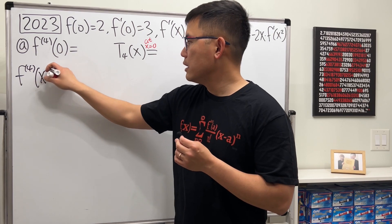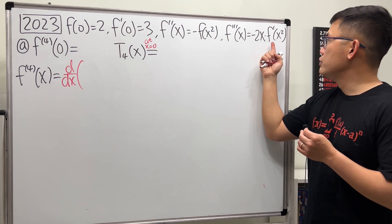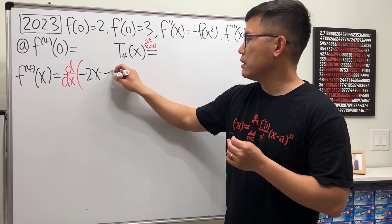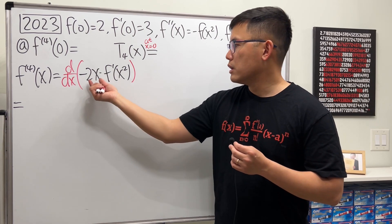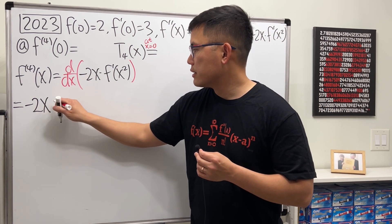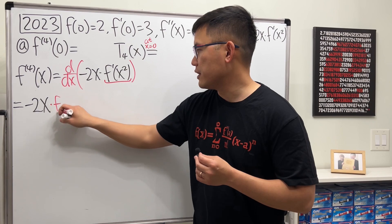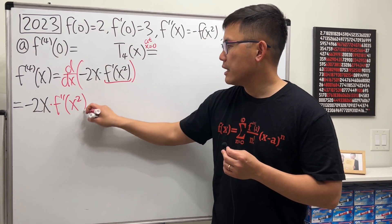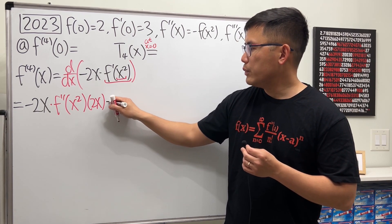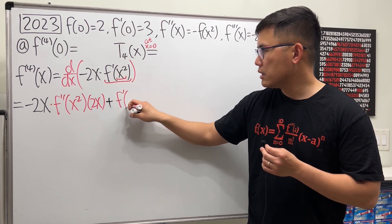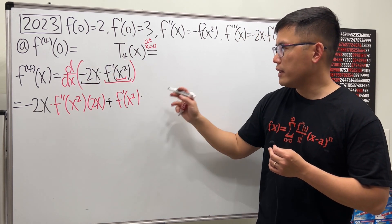The fourth derivative means we will have to differentiate the third derivative, which is negative 2x times f prime of x squared. Here we will have to use the product rule: keep the first function times the derivative of the second. The derivative of f prime is f double prime — that's the second derivative — and then use the chain rule, multiplying by the derivative of the inner function, which gives us 2x. Then we add the second function as it is and multiply by the derivative of the first. The derivative of negative 2x is negative 2.